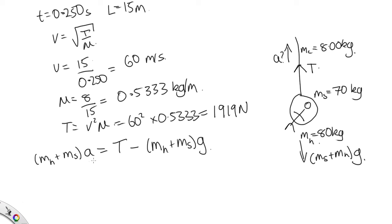OK, now we can solve this to work out the acceleration. So acceleration is T over mh plus ms minus g. So this is 1,919 over 80 plus 70 minus 9.8. Solving that on the calculator, we end up with 3.0 meters per second squared, the acceleration upwards of the helicopter.